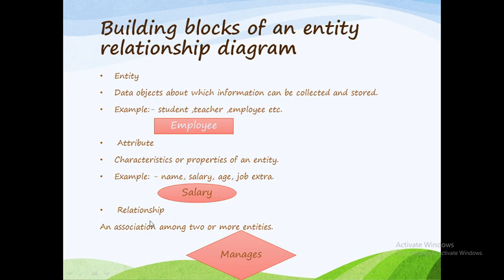A relationship is an association among two or more entities. Association means a connection — two or more entities can combine through some connection. These relationships are represented by a diamond-shaped box.